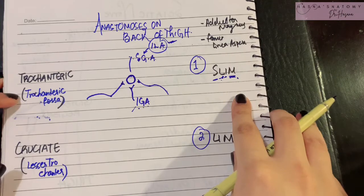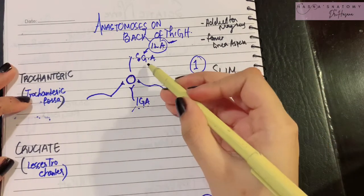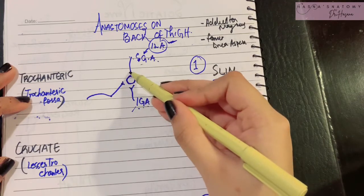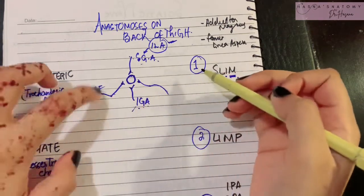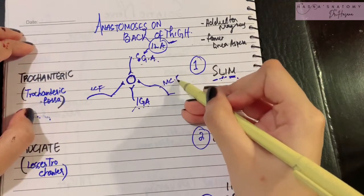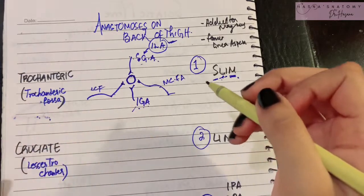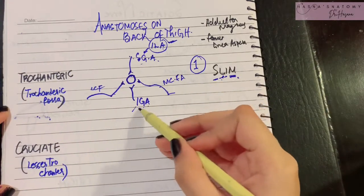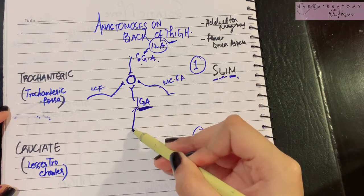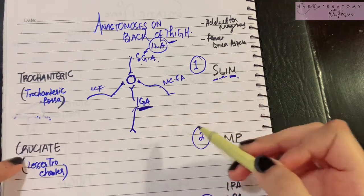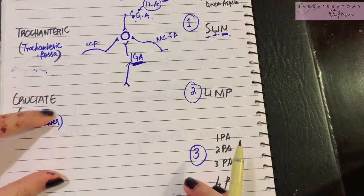To summarize the trochanteric anastomosis, which occurs in the trochanteric fossa: the superior gluteal artery gives a branch, the ascending branch of the lateral circumflex femoral gives a branch, the ascending branch of the medial circumflex femoral artery gives a branch, and the inferior gluteal artery gives a branch. The inferior gluteal artery is also playing a role in the anastomosis below — the cruciate anastomosis.